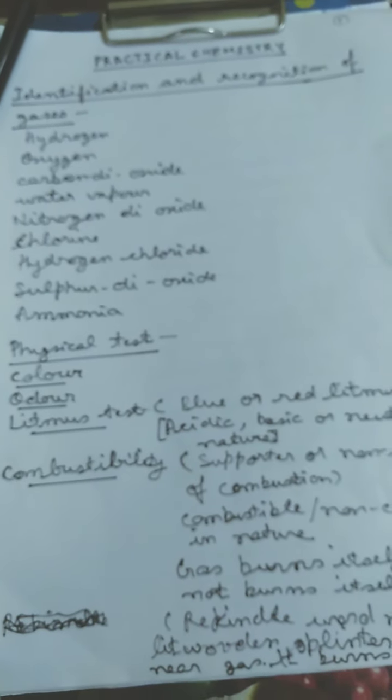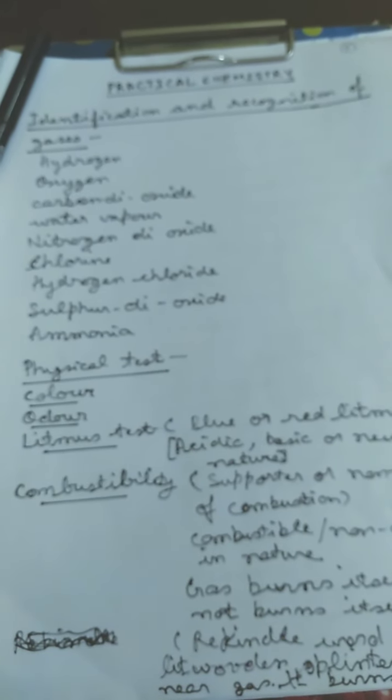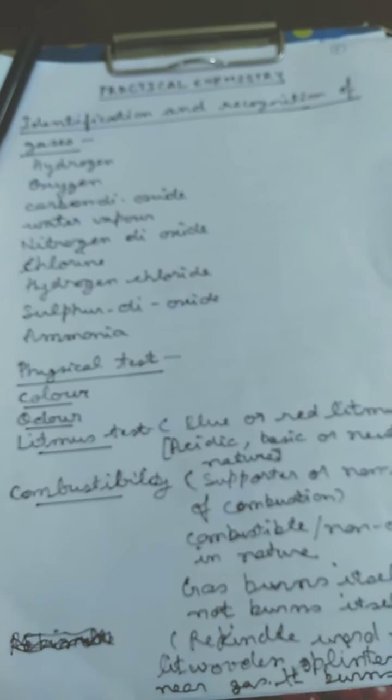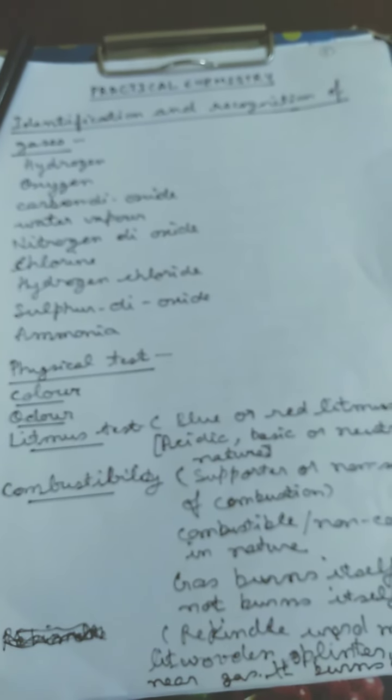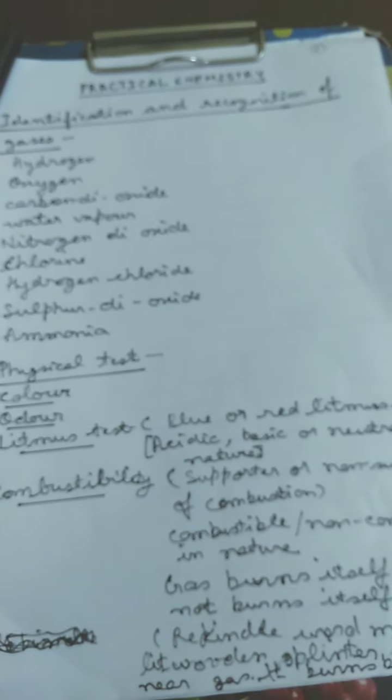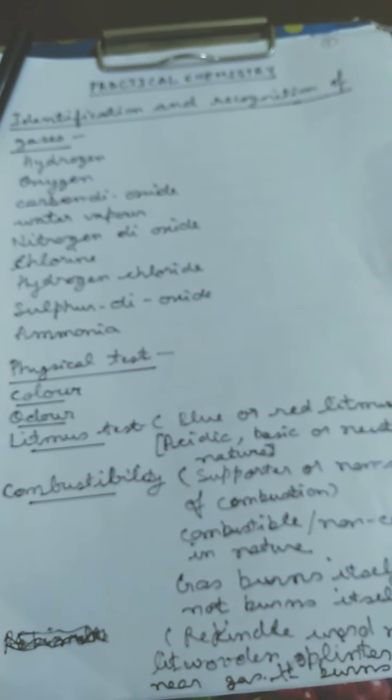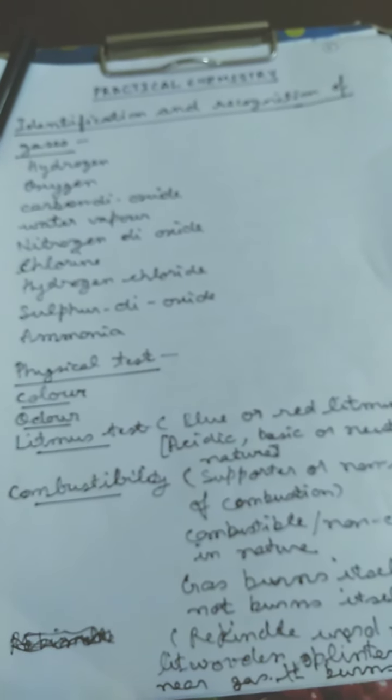Physical test - physical test includes finding out the color, odor, litmus test, combustibility etc. Here in color we will find out whether the gas is colorless or colored in nature or particular odor which the gas is carrying. And third one is the litmus test.